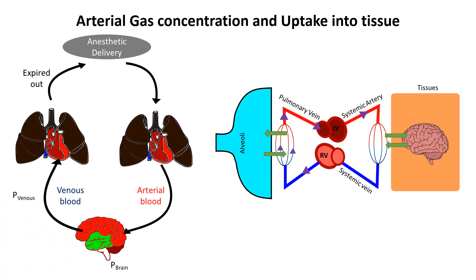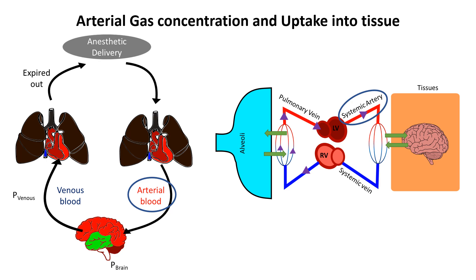Another factor determining movement of inhalational agents to the brain is the arterial gas concentration. It refers to the levels of these agents in the bloodstream, particularly in the arterial blood. The concentration or partial pressure of anesthetics in systemic arteries pumped from the left ventricle is the final determinant of how much anesthetic passes into the brain.